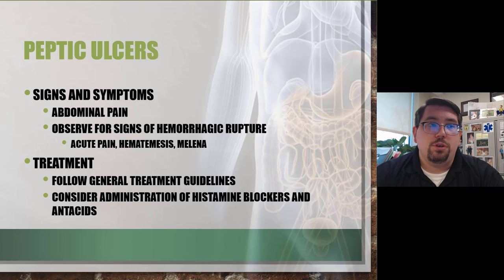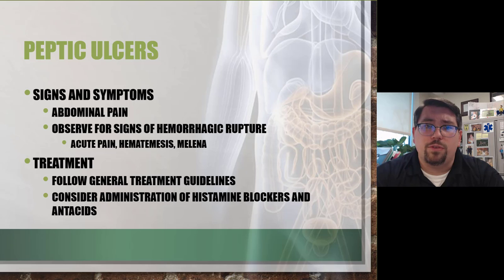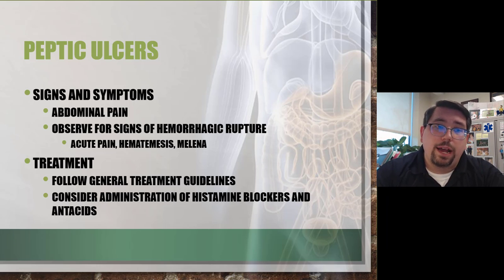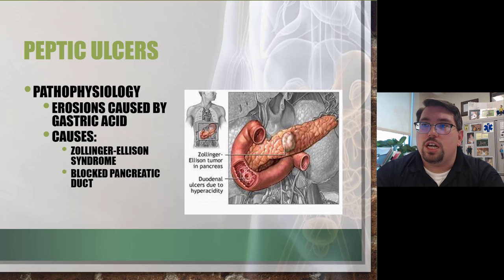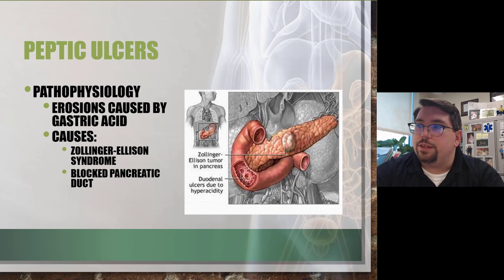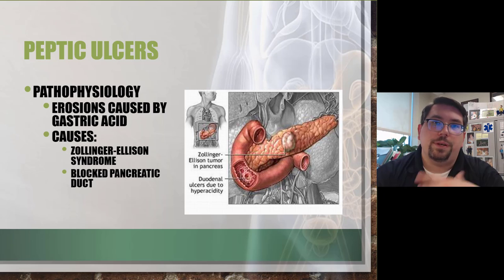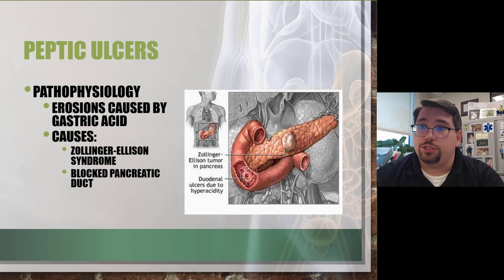Mucosal irritation is reduced by histamine blockers and proton pump inhibitors. Zollinger-Ellison syndrome involves a buildup of tissue from excessive hyperacidity leading to duodenal ulcers, and can impact the pancreas because it's constantly secreting large amounts of gastric juices. If there's a blocked pancreatic duct preventing release of those components, it can lead to further ulcers.